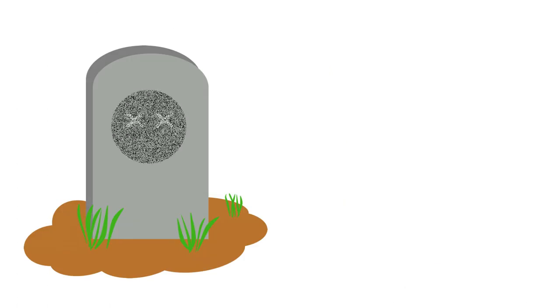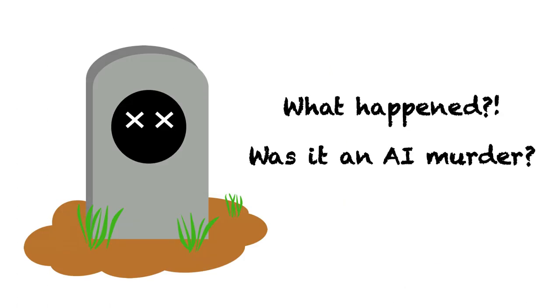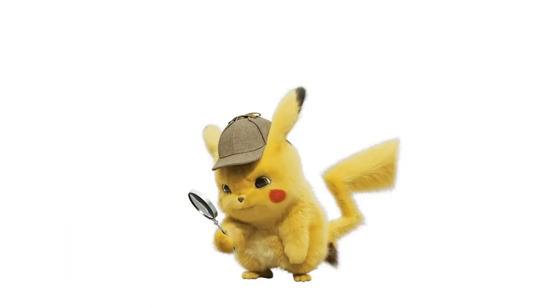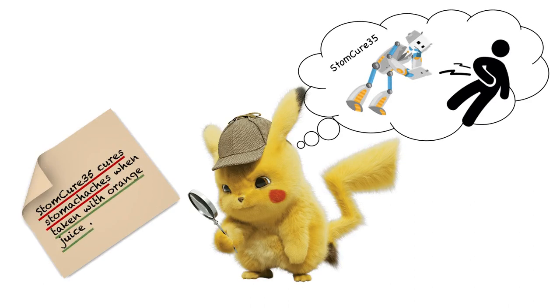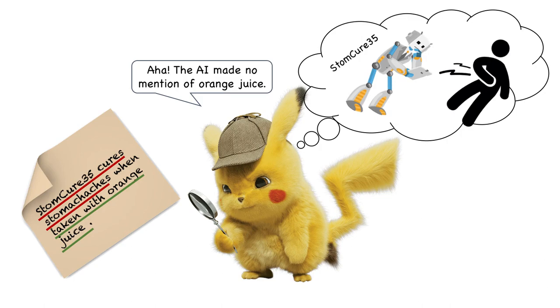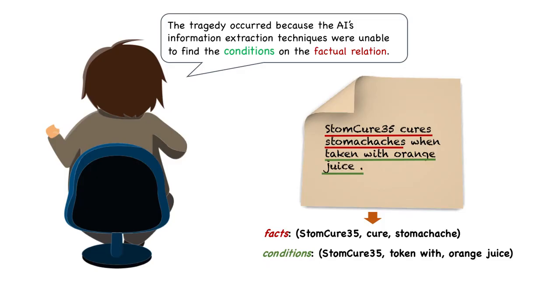Tragically, George dies two days later. What happened? Was it an AI murder? Eventually, the reason is uncovered. The medical publications state that StomCure35 cures stomach aches when taken with orange juice. The AI made no mention of orange juice. The tragedy occurred because the AI's information extraction techniques were unable to find the conditional on the factual relation.